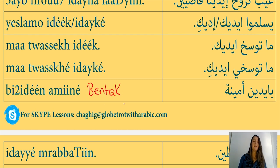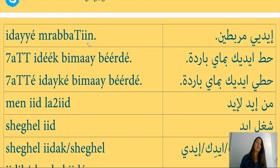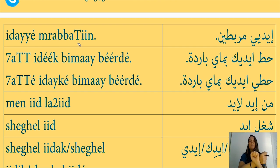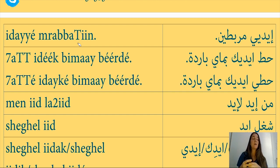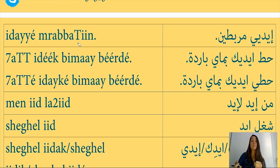Idayye mrabbatin — my hands are tied. Idayye means my hands, mrabbat means tied, mrabbatin is the plural form. This expression means I am not capable of doing something — I am stuck and cannot take action even if I really want to. For example, if I want to help my family but I'm very poor and can't bring them food, I say idayye mrabbatin.